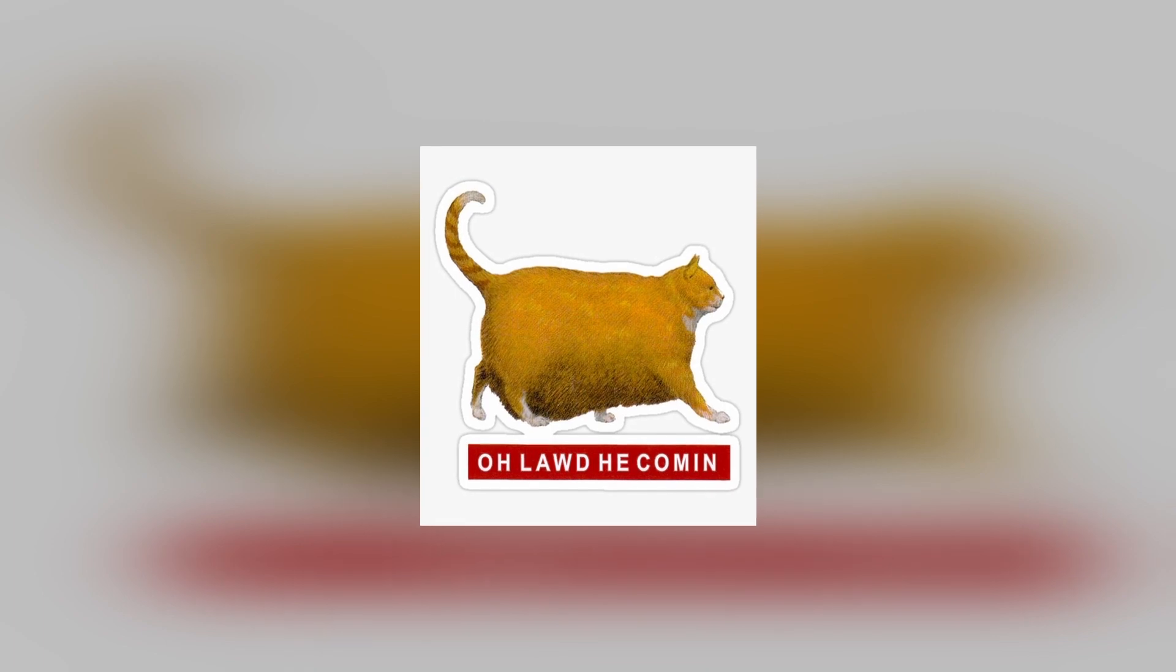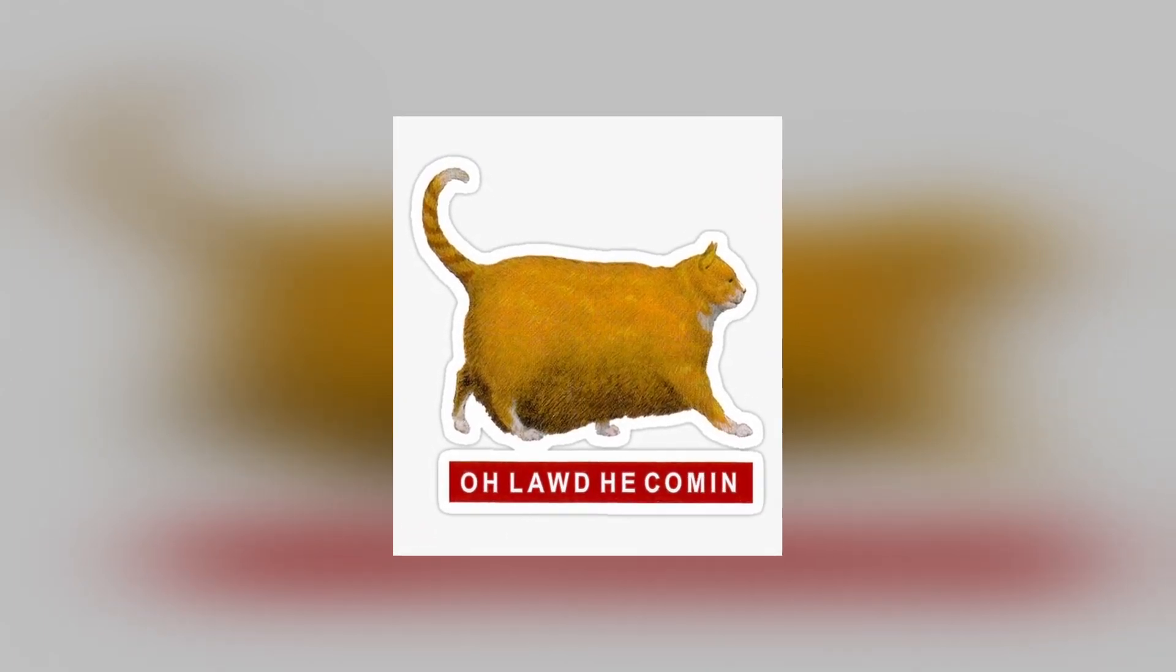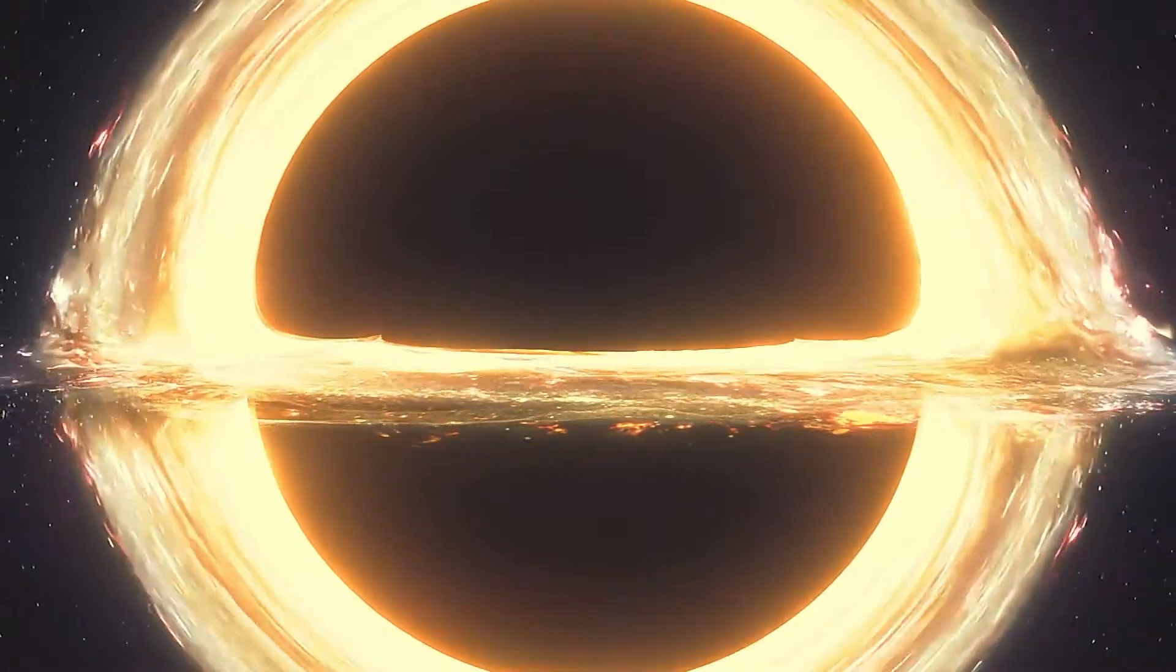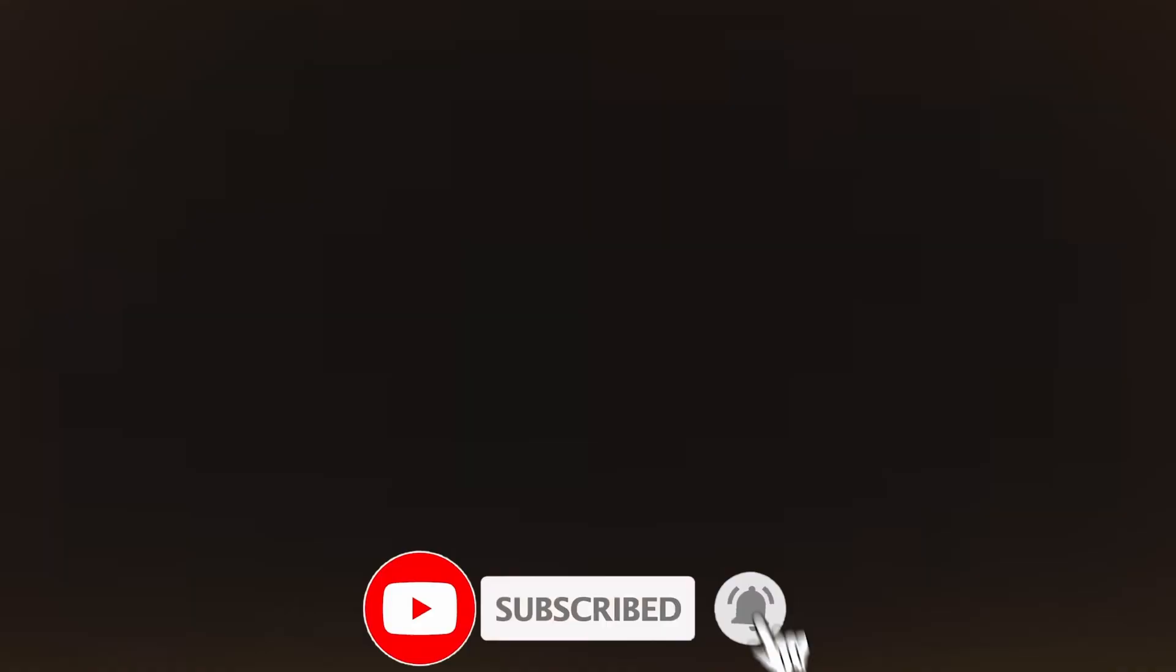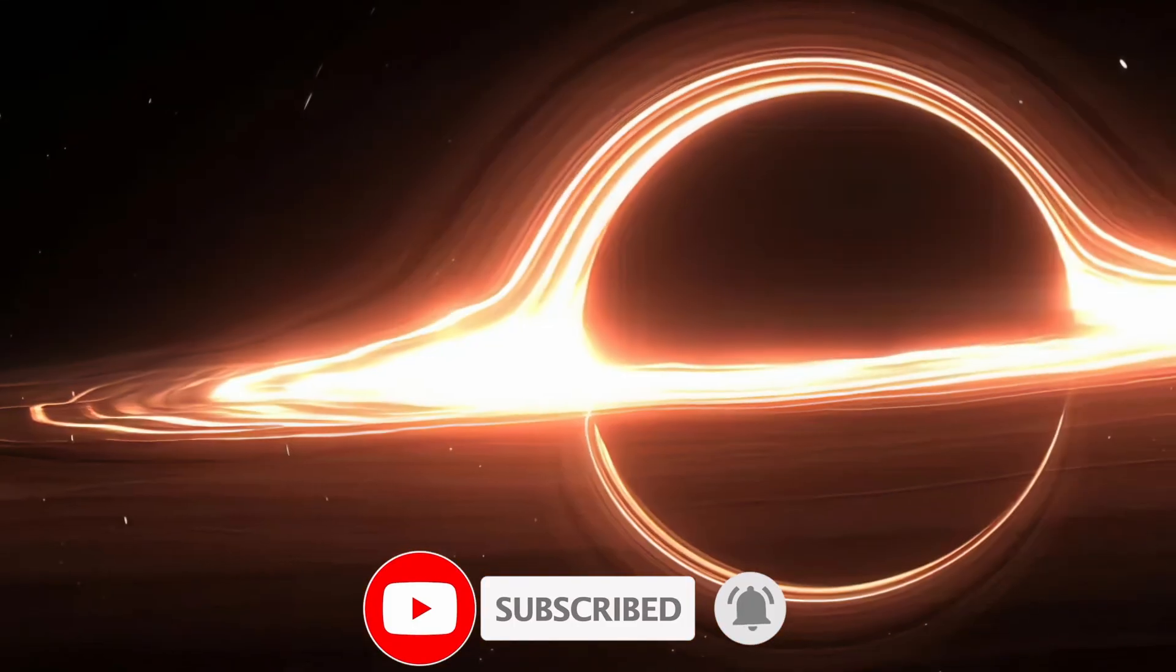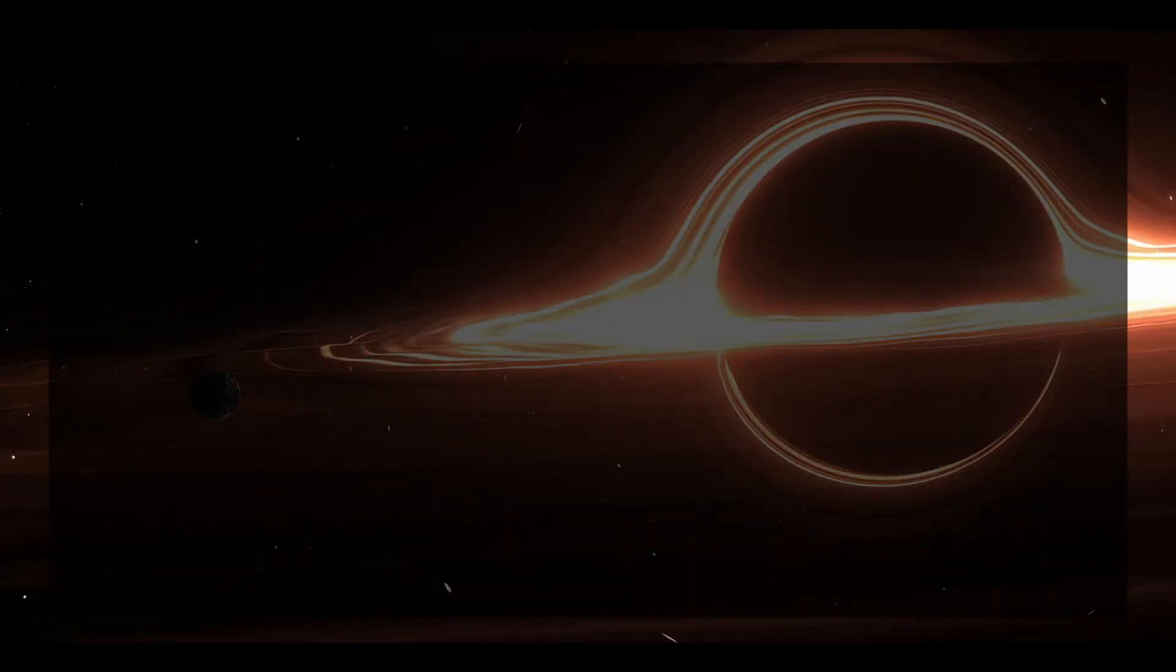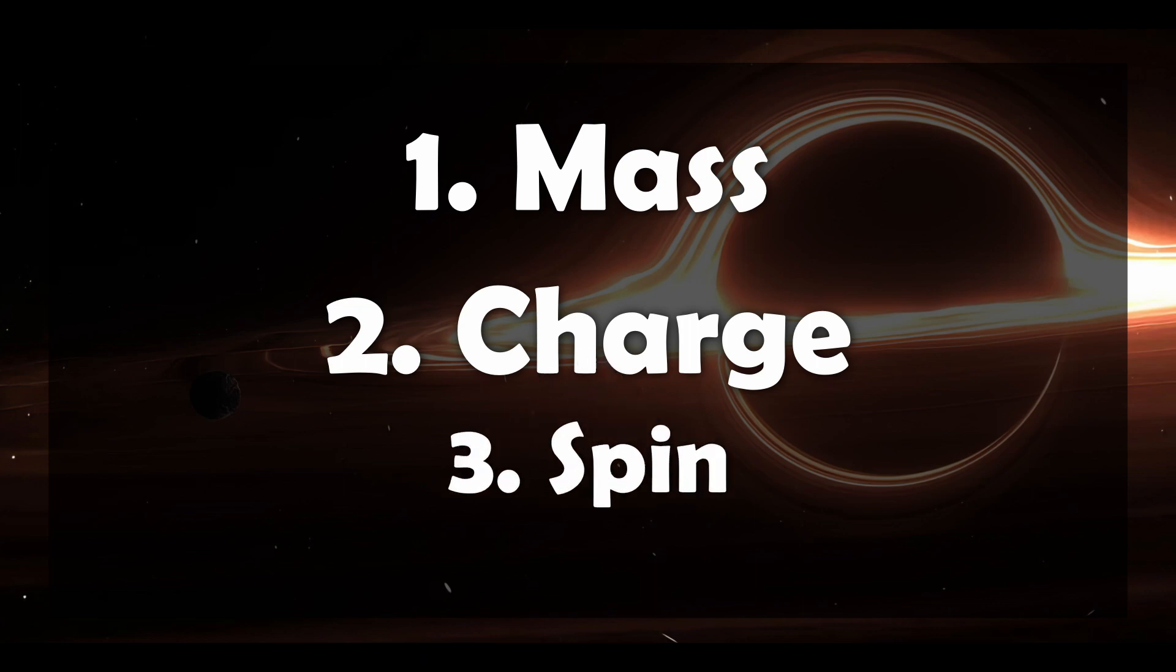A black hole's mass exists inside the event horizon, where no information can escape to the outside world. Because of this information trap, there are only three properties that make any black hole different from any other one: mass, electrical charge, and spin.